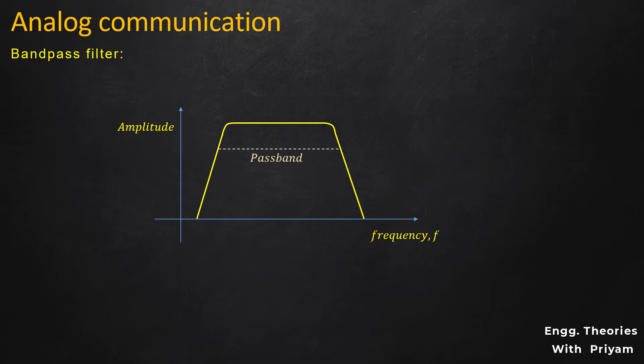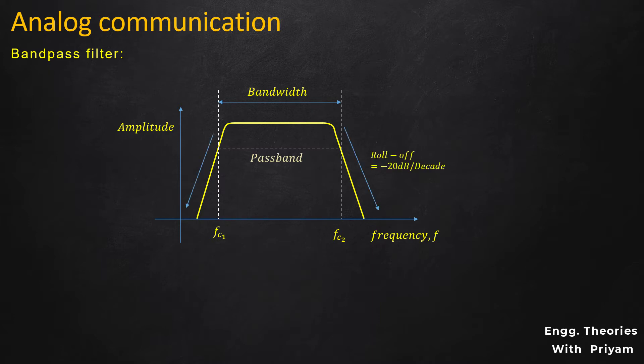With a bandpass filter, anything higher or lower than the selected frequency range will be attenuated or rejected. This bandpass filter has two cutoff frequencies: the higher cutoff frequency FC2 and the lower cutoff frequency FC1. The difference FC2 − FC1 is the bandwidth of the bandpass filter. After the cutoff frequencies, the roll-off of this bandpass filter is −20 dB per decade. This bandpass filter is also very useful for removing unwanted noise from the desired signal.